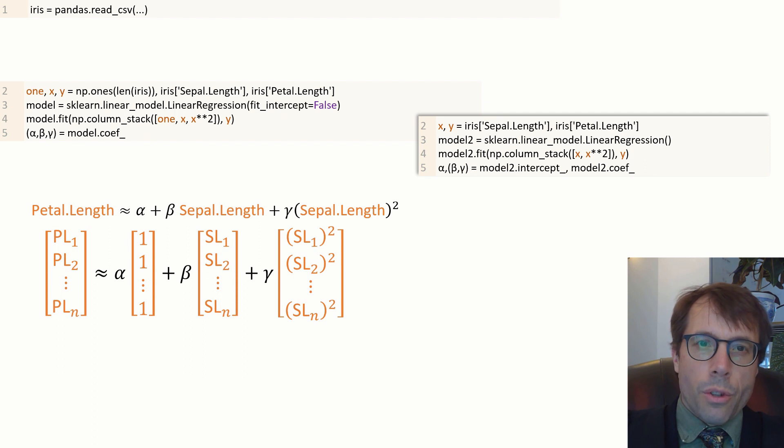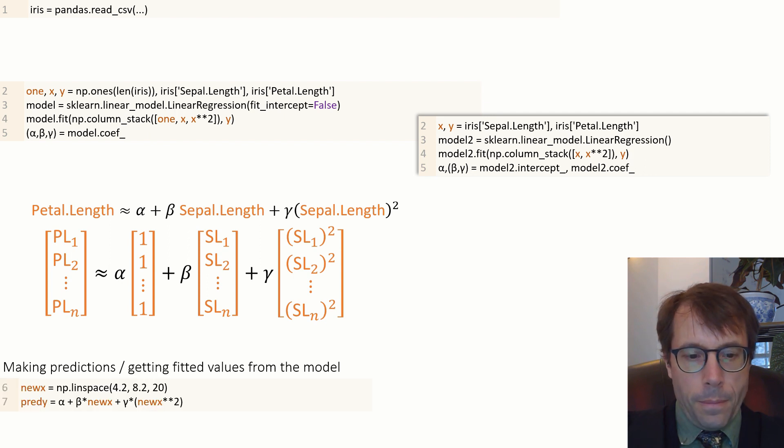The next thing we generally want to do, after we've estimated parameters, is make predictions using our model. Here's how we can do that. First, I'll decide the feature values at which I want to get readouts.